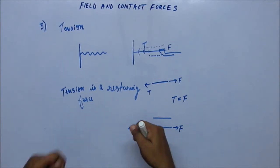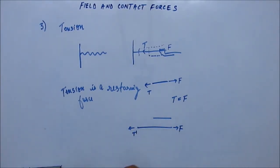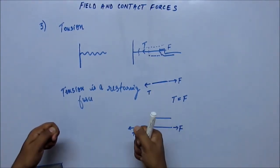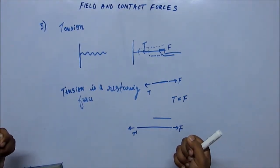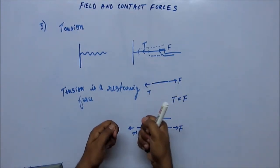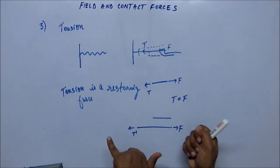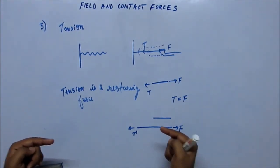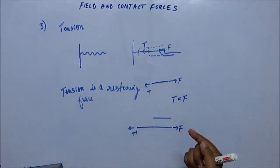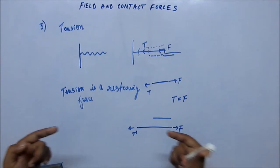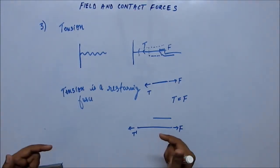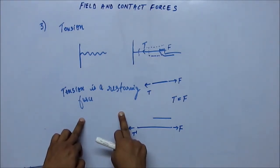An important thing to note is that tension is a restoring force. Because we are stretching the string, the tension tries to restore and oppose the stretch, returning it to the relaxed, unstressed condition. A restoring force always acts inward — away from the stretched end. Our hand is pulling outward and the restoring force acts away from our hand, and also away from the wall, so at both ends the tension acts inward.